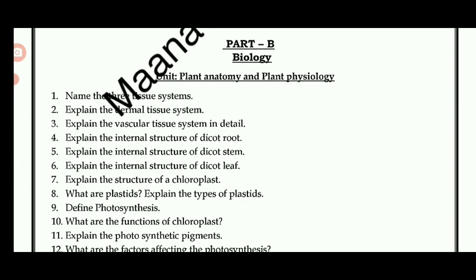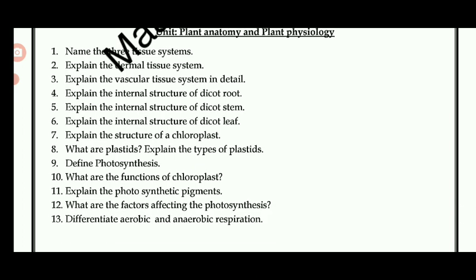For biology, very important topics include: explain the internal structure of dicot root, dicot stem, and dicot leaf; explain the structure of chloroplast; what are plastids and their types; define photosynthesis; what are the functions of chloroplast; explain photosynthetic pigments; what are the factors affecting photosynthesis; and the difference between aerobic and anaerobic respiration.